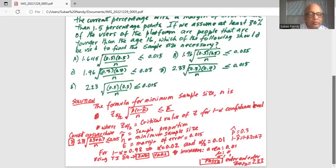Now 2.33 times square root of p hat. So sample proportion is given as 0.3. So 2.33 times square root of in the numerator 0.3 times 0.7 divided by n sample size is less than or equal to 0.015.